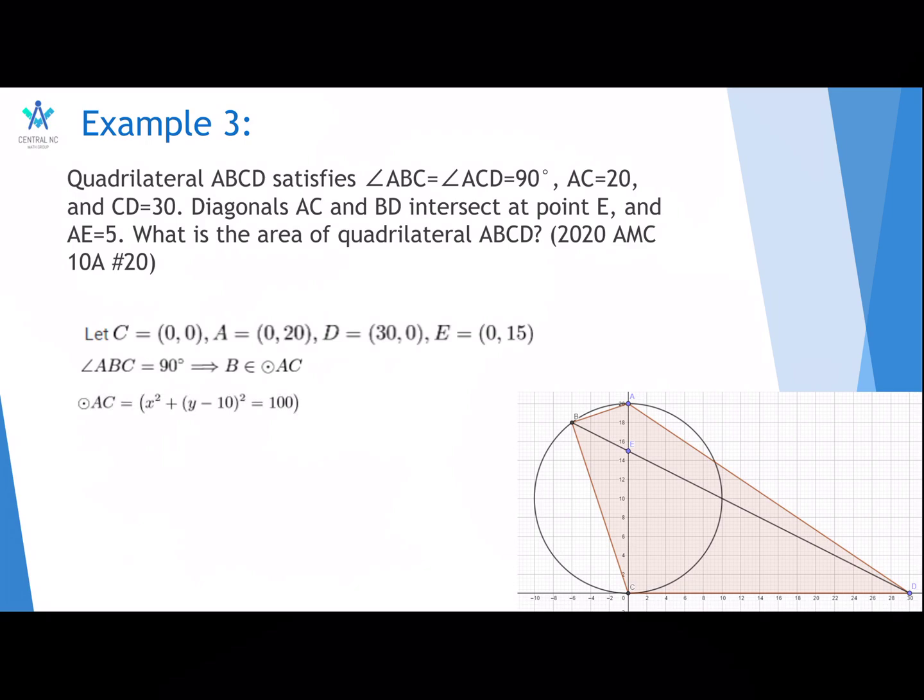Since angle ABC equals 90 degrees, then B is on the circle with diameter AC. And that circle has equation X squared plus (Y minus 10) squared equals 100. And the line ED, since it also goes through B, it's also the line BD. And the equation is Y equals 15 minus X/2.